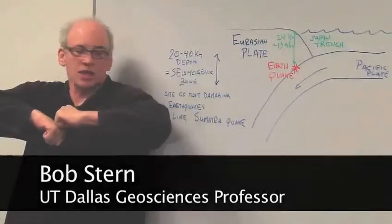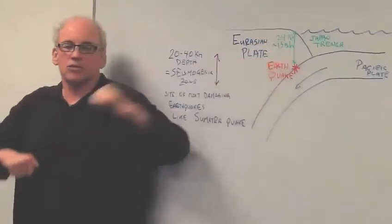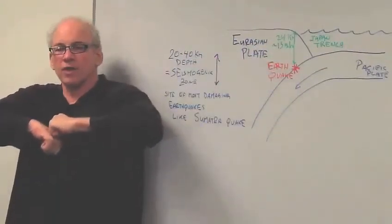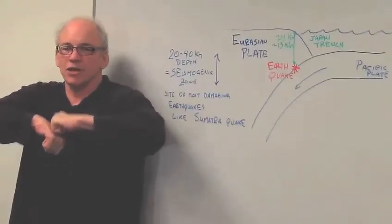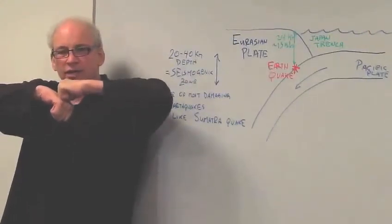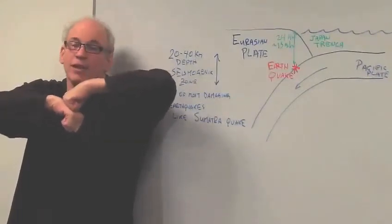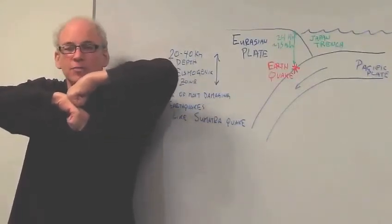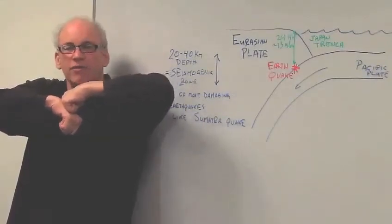But what happens in some of these subduction zones is that this surface between the two plates locks up. And as that locks up, the compression that happens between the two plates builds up with time. And with time, what you get is a deformation, a bending of the upper plate, the Japan plate, and that builds up until some critical threshold is reached and everything breaks.